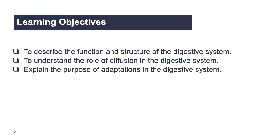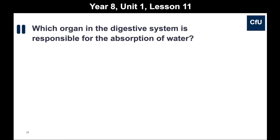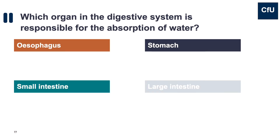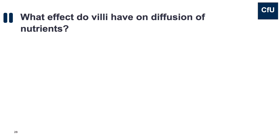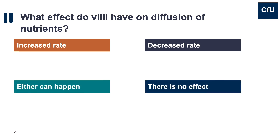The last of these objectives is to explain the purpose of adaptations in the digestive system. Students will know they've met this when they achieve the corresponding success criteria — explaining the consequences of lacking key adaptations in the digestive system — which they can demonstrate through completing tasks embedded in the lesson. I can then ask a range of formative assessment questions related to these ideas to check at multiple points in time whether the key ideas have been learnt. These include checks for understanding, for example asking students to identify the role of villi on the rate of diffusion, but can also include less structured checks through asking questions to gauge understanding during explicit instruction.